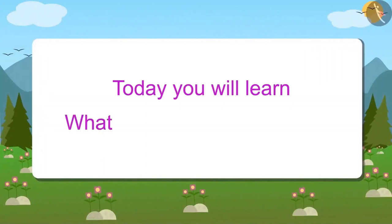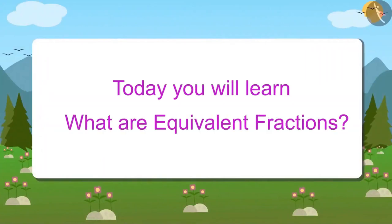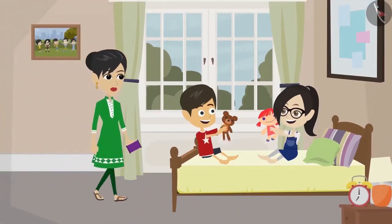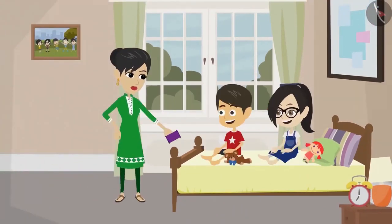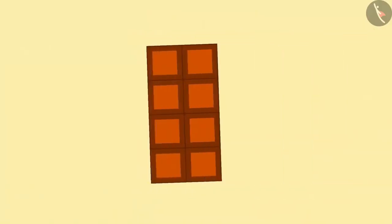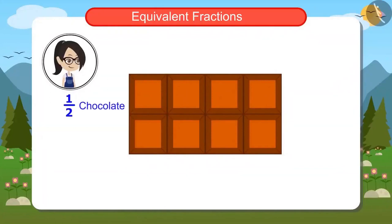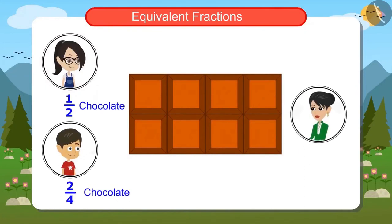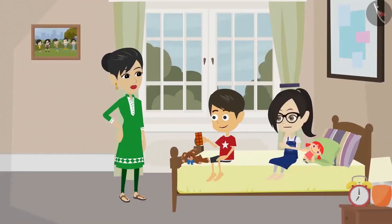Today you will learn about equivalent fractions. Riyansh and Vandana are playing at Vandana's house. Mummy brought a chocolate for both of them. I brought a chocolate for both of you — you both should share and eat it. Vandana, you should eat one half of it, and Riyansh, you eat two fourths of it. And then give me the chocolate that is left.